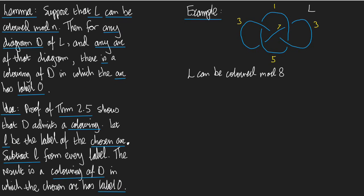For example, at the orange crossing here, the colouring equation says that 3 plus 3 should be congruent to 2 times 7 is 6 congruent to 14 mod 8. Yes, it is. And you can check at all the crossings that this equation holds.